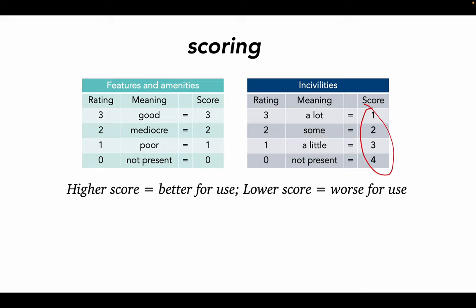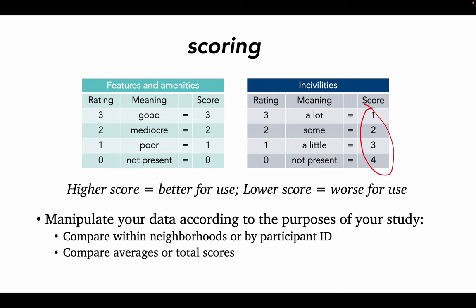Once you've finished scoring, you can either add up your ratings and use the sum total, or divide the sum by the number of features or amenities listed in order to get an average. Which you choose depends on what you want to measure. Are you interested in documenting the number and general condition of all amenities and features in a single resource? Or are you more interested in comparing multiple resource environments across a community? You could even test perceptions or reliability by comparing multiple data collectors' scores of the same resource. Think about what exactly you want to know as you score.